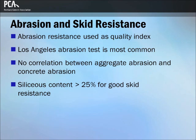In this test, a specified quantity of aggregate is placed in a steel drum containing steel balls. The drum is rotated and the percentage of material worn away is measured. A comparison of aggregate abrasion test results with the abrasion resistance of concrete made with the same aggregate does not generally show a clear correlation. To provide good skid resistance on pavements, the siliceous particle content of the fine aggregate should be at least 25%. For specification purposes, the siliceous particle content is considered equal to the insoluble residue content after treatment in hydrochloric acid under standardized conditions.